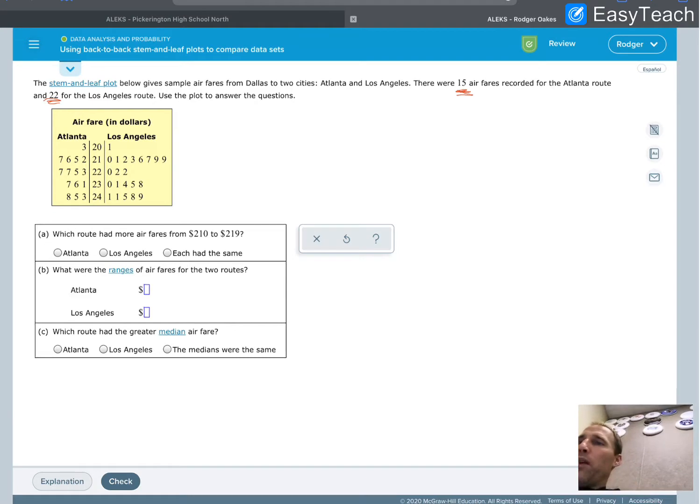We want to use the plot to answer the questions. Here we see Atlanta's stuff over here and Los Angeles over here. Which route has more airfares from 210 to 219? Well, the way a stem and leaf plot works, the stem - the 20, the 21, the 22, the 23, and the 24 down the middle - that's going to give us the values of the first two digits.